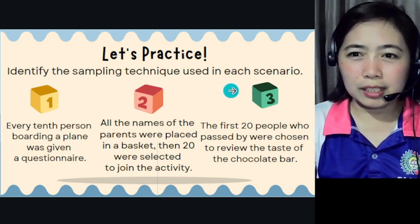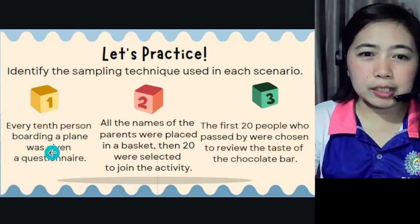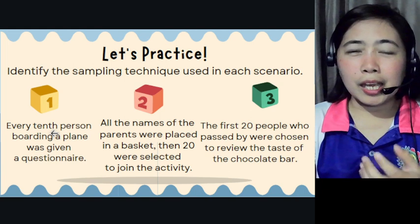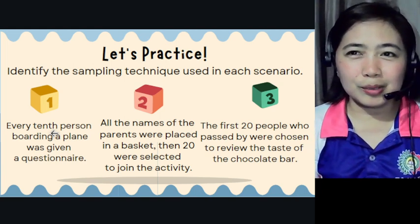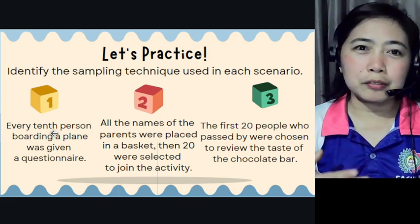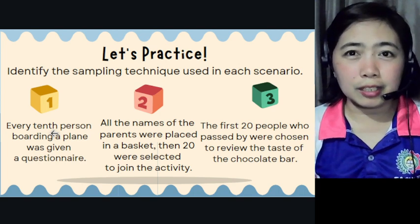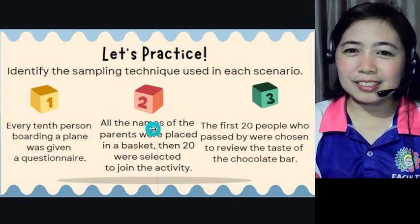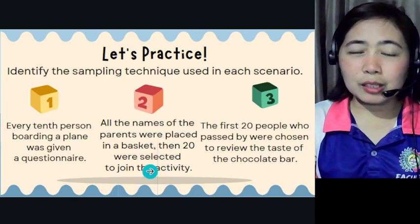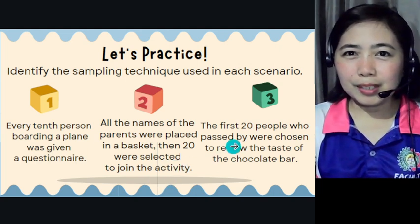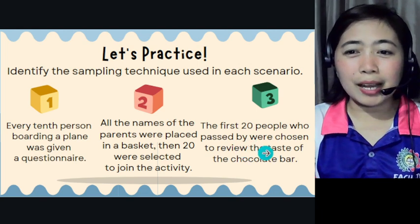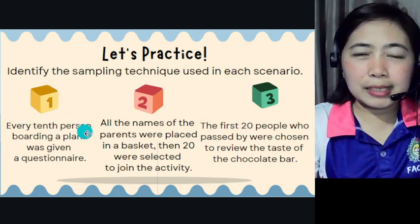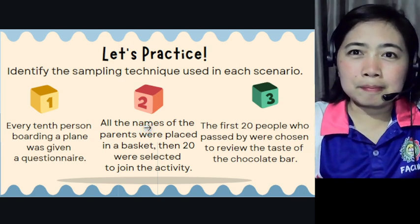Let's practice. Identify the sampling technique used in each scenario. Scenario 1: Every tenth person boarding a plane was given a questionnaire. Scenario 2: All the names of the parents were placed in a basket, then 20 were selected to join the activity. Scenario 3: The first 20 people who passed by were chosen to review the taste of a chocolate bar. What sampling technique is used in each?